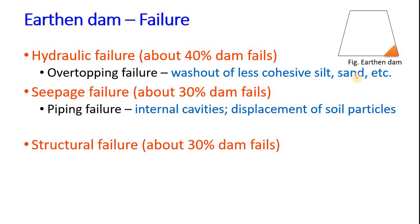Now seepage failure. Piping failure means internal cavities are formed, pipe-like structures will be formed by eroding or scouring, and slowly this pipe is formed causing piping failure with internal cavities and displacement of soil particles.